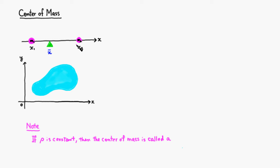So what we want to do is we want to find the point, let's call it x-bar, where we can balance these two masses.